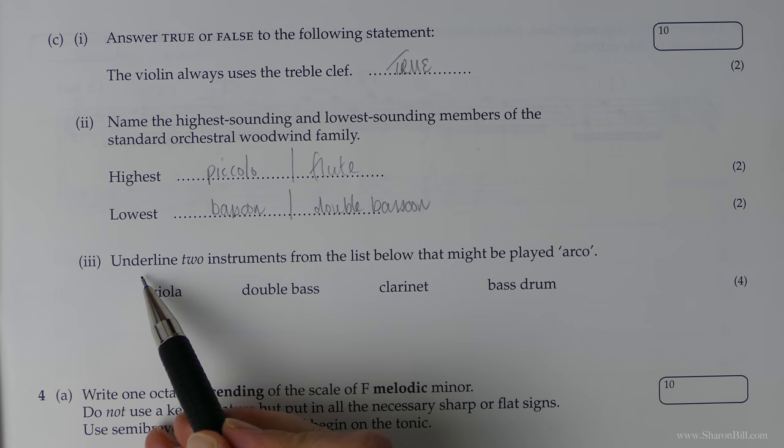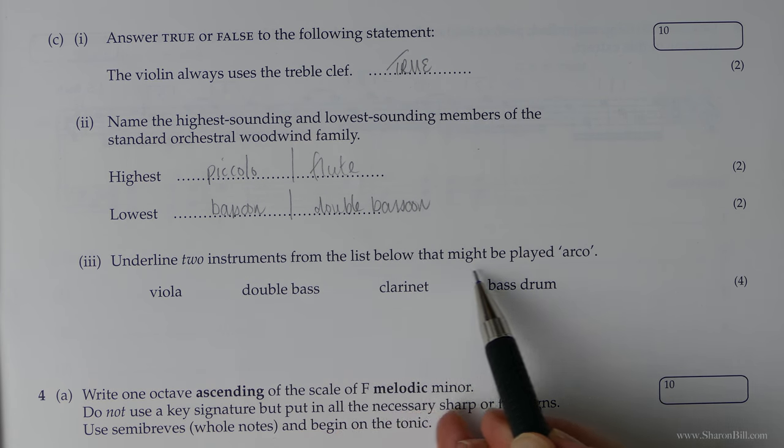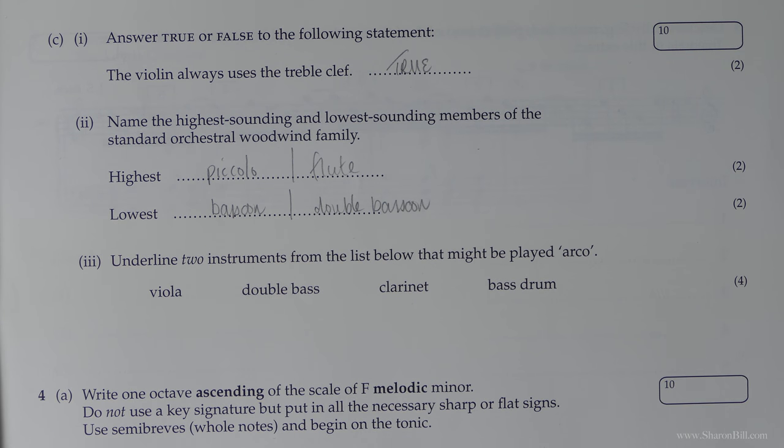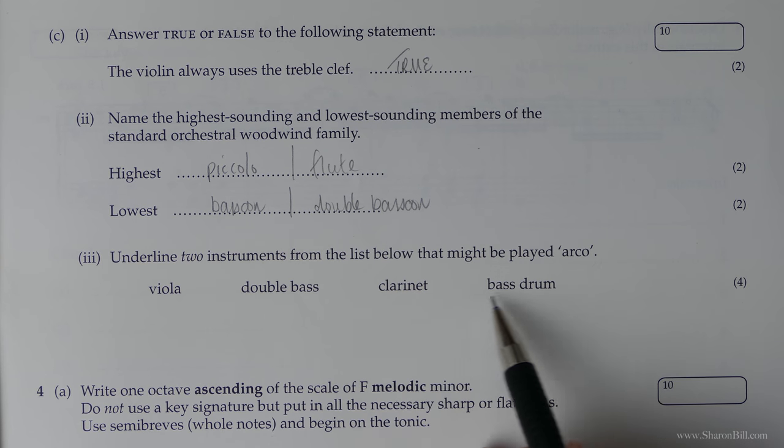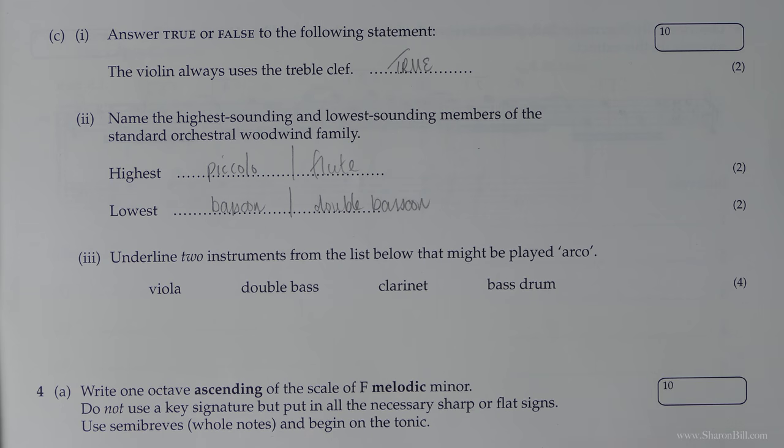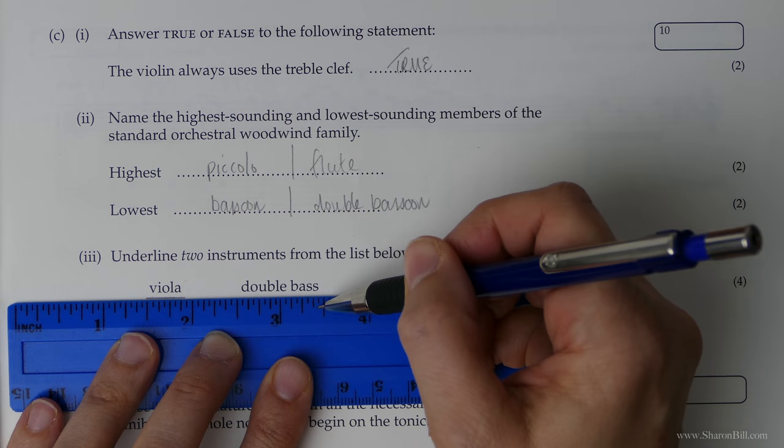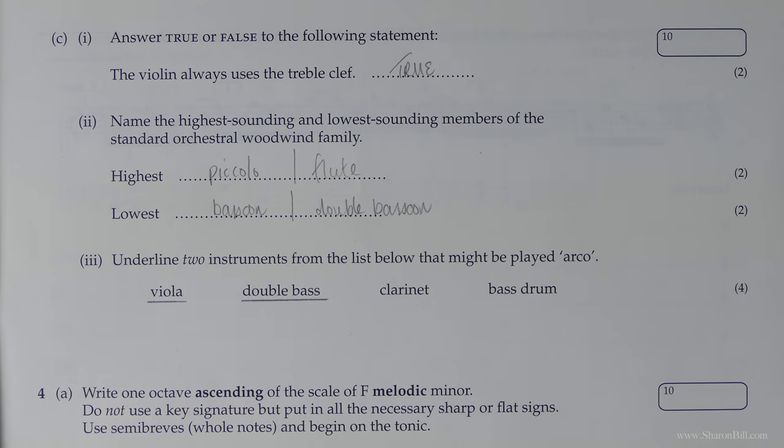Okie dokie. Underline two instruments from the list below that might be played arco. So that means with a bow. So clarinet and bass drum, of course, wouldn't have bow. You're looking for string instruments that you could use the bow with. And so it's got to be the viola and the double bass. And that's that.